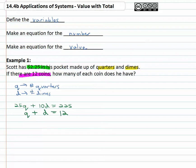Now we're ready to solve this system. Notice it's set up almost ready to solve by elimination, addition. We need to get opposites in front of one of the variables. It would be really easy to get 10 and negative 10 in front of the dimes, so let's do that. Let's multiply the second equation by negative ten.